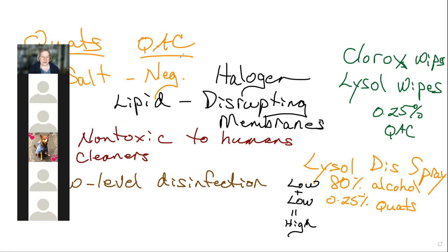Questions about quaternary ammonium compounds: by themselves they are low-level disinfectants, which is fine depending on what you're trying to kill. For SARS-CoV-2 that causes COVID, Clorox and Lysol disinfecting wipes are great and work marvelously.